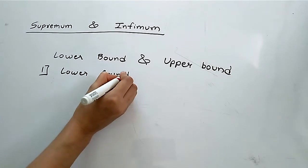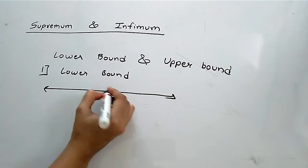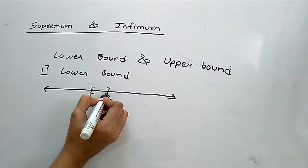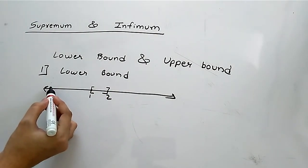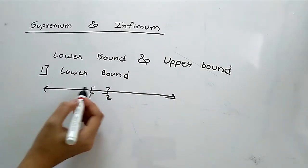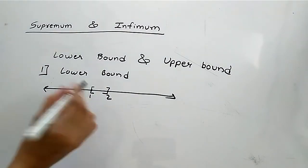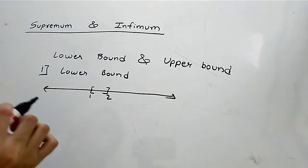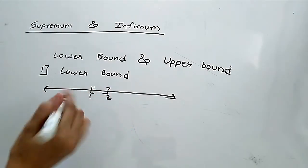To understand this, we will take a real line. Here we take 1 and here 2, so we are considering the closed interval [1, 2]. Values to the left of 1 are smaller, and values to the right of 2 are bigger.